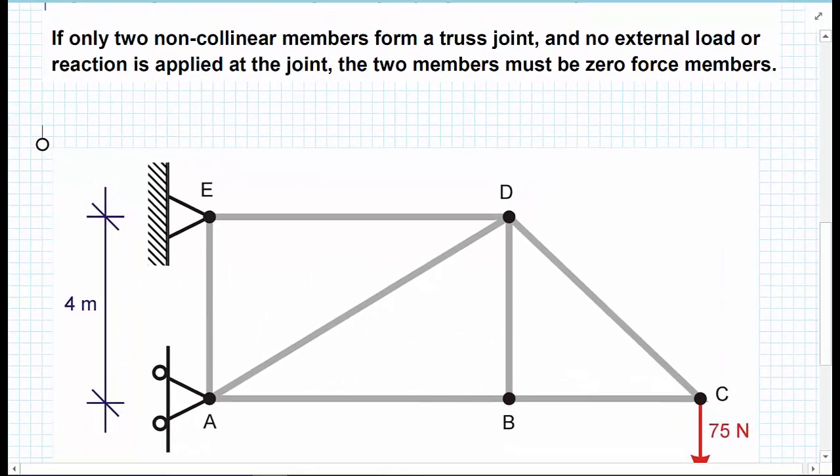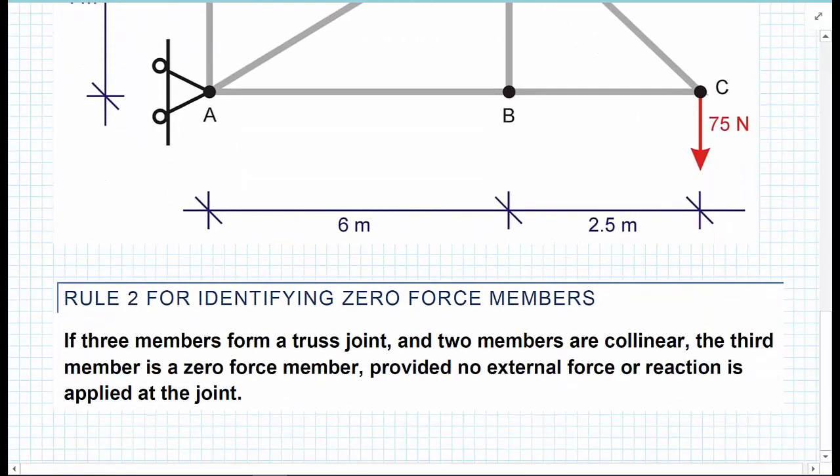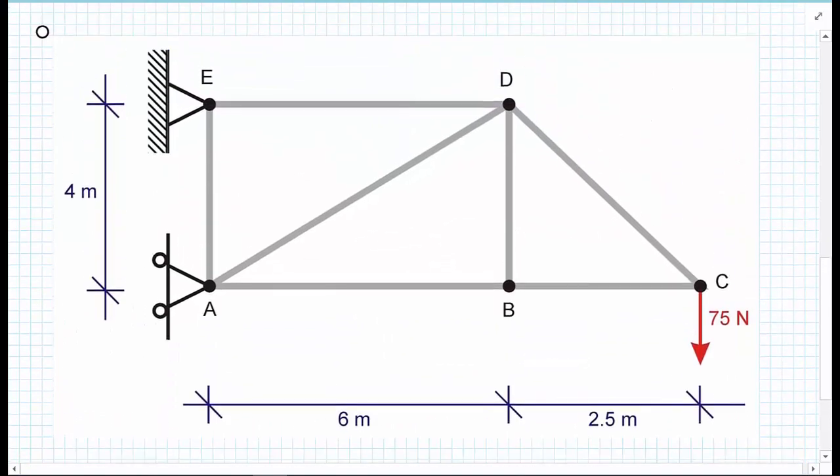If three members form a truss joint and two members are collinear, the third member is a zero force member, provided that no external force or reaction is applied at the joint. This says three members form a truss joint and two members are collinear.